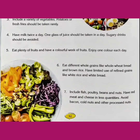Point number seven: Include fish, poultry, beans and nuts in your diet. Have red meat and cheese in less quantity. Avoid bacon, cold cuts and other processed foods. हमें अपने भोजन में मछली, अंडे, beans और nuts शामिल करने चाहिए। Red meat और cheese कम मात्रा में लेनी चाहिए। आजकल market में बहुत सारी packet में pack चीजें मिलती हैं जिन्हें oven में cook या deep fry करके खाते हैं — वो हमारे लिए healthy नहीं होती हैं, तो उनका बहुत कम use करना चाहिए।